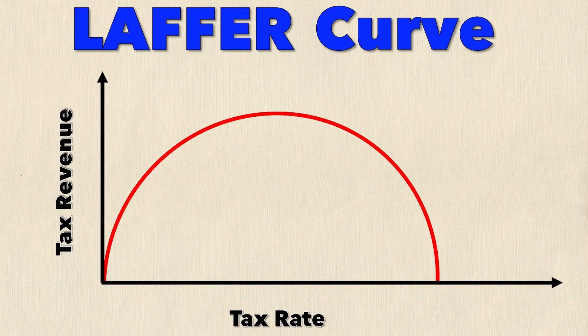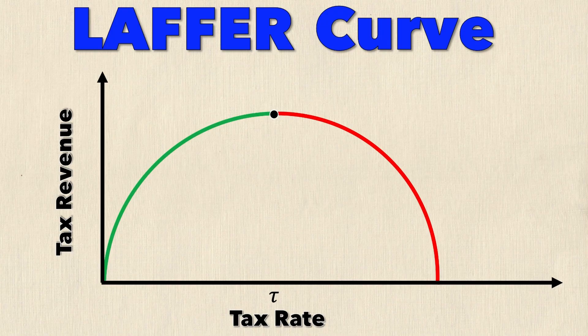With the tax rate on the x-axis, you can see that this curve is divided up into two pieces. As the tax rate climbs, it gets closer and closer to that maximum tax revenue amount until it reaches the maximum — the tax revenue can't get any higher. There is no higher point on this line, and so that maximum tax revenue is achieved at some tax rate tau.